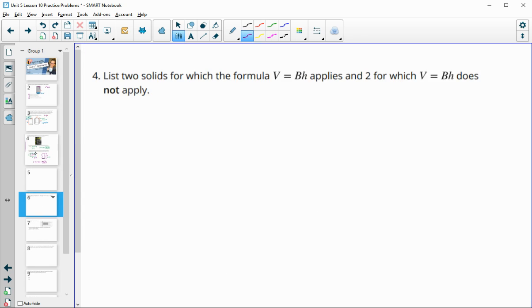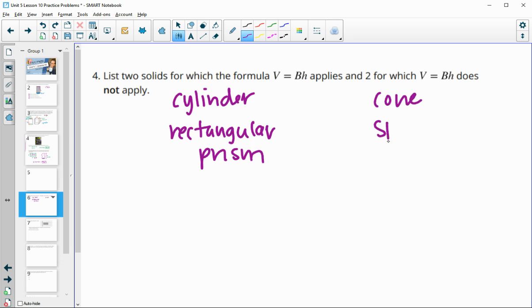Number 4, list 2 solids for which the formula volume equals area of the base times height applies, and 2 for which it doesn't. We did a cylinder and a rectangular prism, so those are 2 that it would work for. A cone wouldn't work, a sphere wouldn't work. Those are 2 examples. You could do any type of pyramid, wouldn't work.